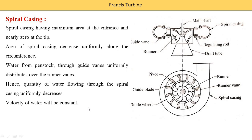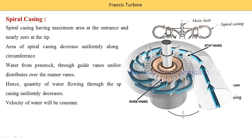If we think the area of the casing is reduced continuously, then velocity should increase. But in this case, velocity remains constant because quantity Q is not constant — it is continuously reduced as water is supplied to the different guide vanes. Quantity is reduced, area is also reduced, so velocity remains constant in spiral casing. Here the inlet of the casing shows water entering, area gradually reducing, supplying water to different guide vanes.